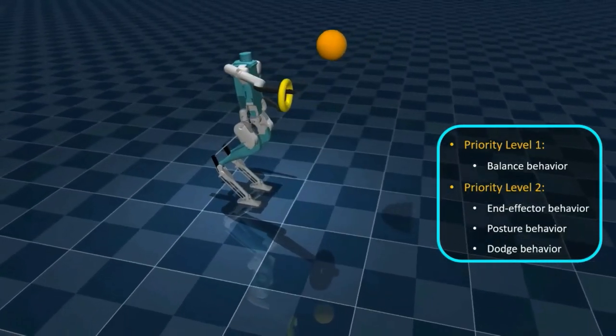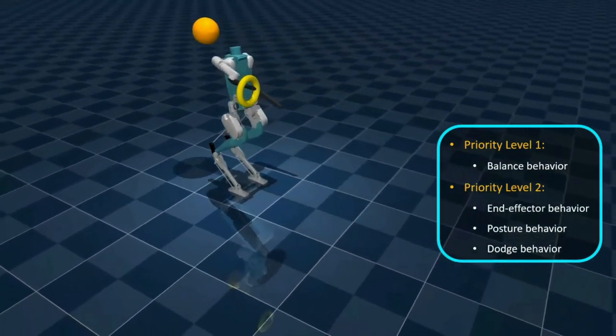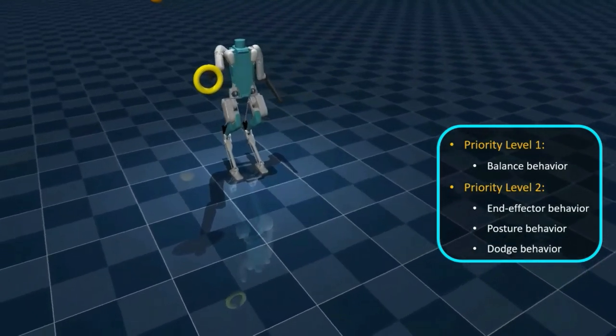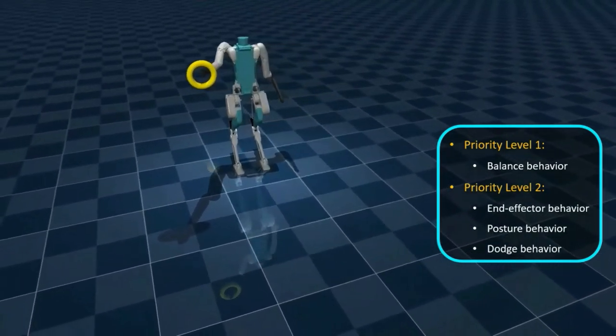With Kinodynamic Fabrics, the robot is able to generate and execute whole body motions to accomplish the task of keeping its right hand in the yellow hoop while dodging the incoming basketball.